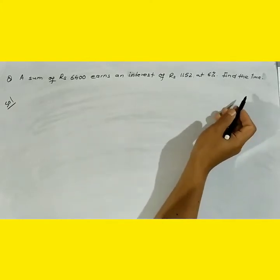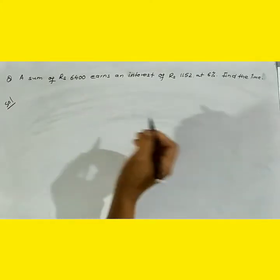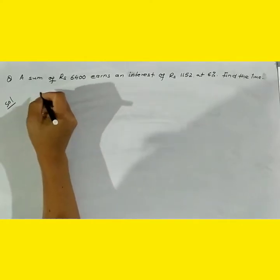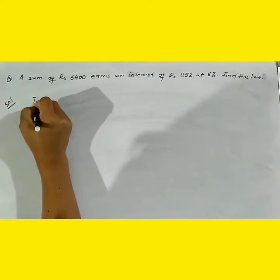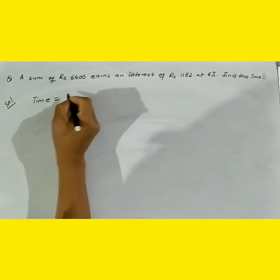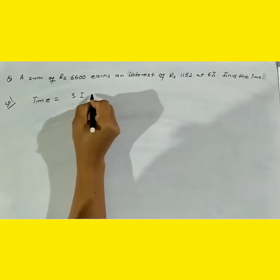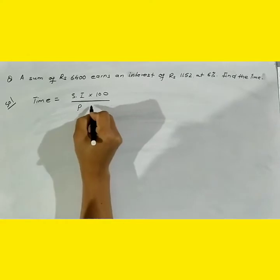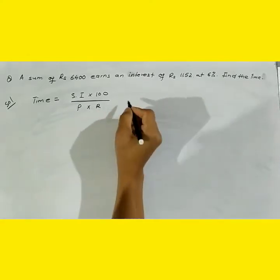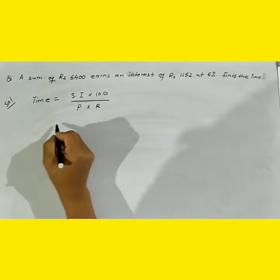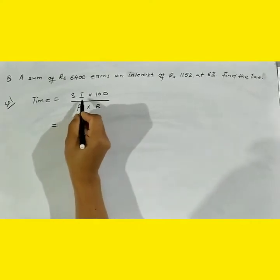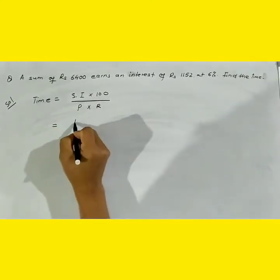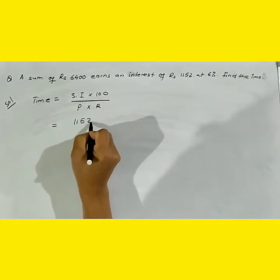We have a formula for that: Time equals simple interest times 100 divided by principle times rate. The simple interest is 1152.